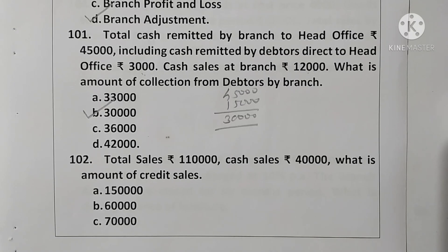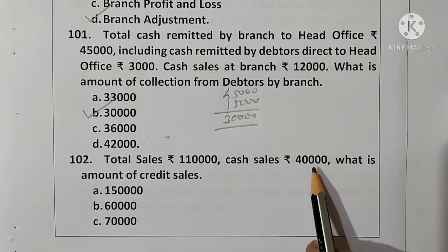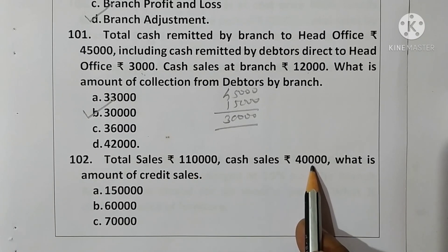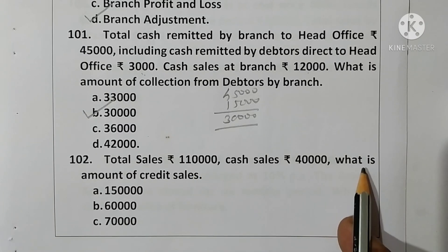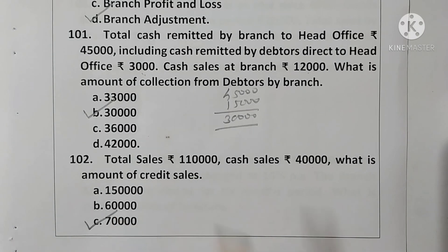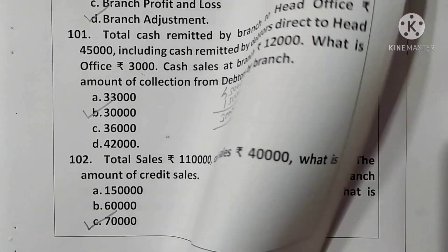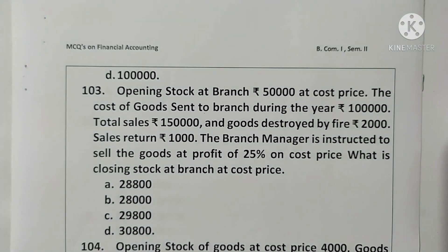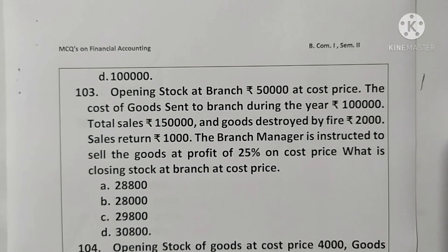Question 102: Total sales rupees 1,10,000; cash sales rupees 40,000. Credit sales equals 1,10,000 minus 40,000 equals rupees 70,000. Option C is correct.